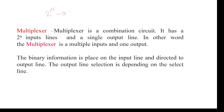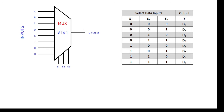Here, n indicates the number of selection lines. For example, if n is 3, then 3 selection lines are required, with 1 output line, and 2^3 means 8 input lines — that is an 8-to-1 multiplexer. Here you can see this is an 8-to-1 multiplexer logic diagram. There are 8 inputs, a single output, and selection lines s1, s2, s3. This is the truth table for that.